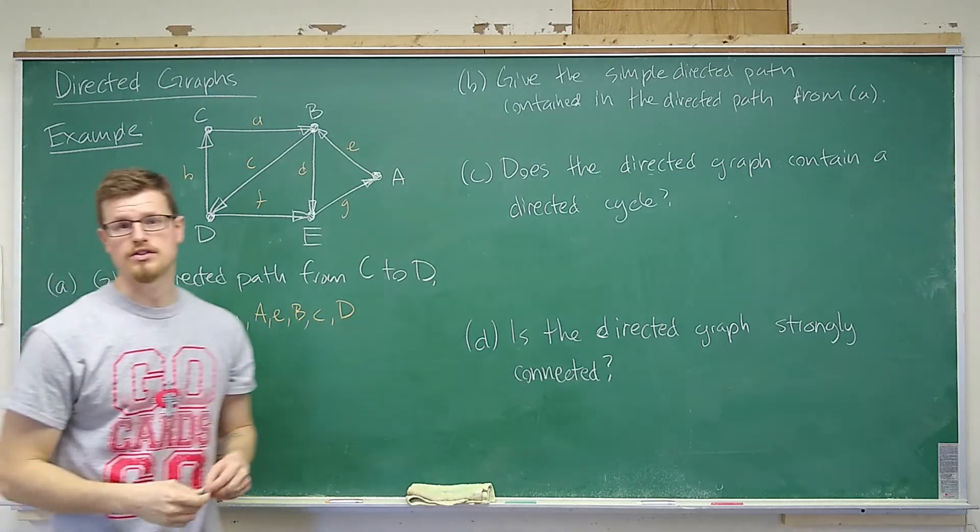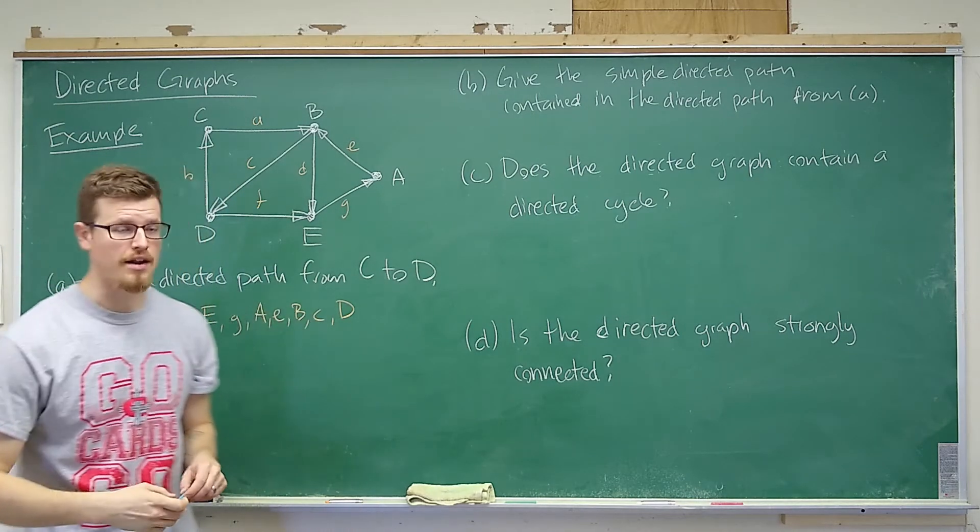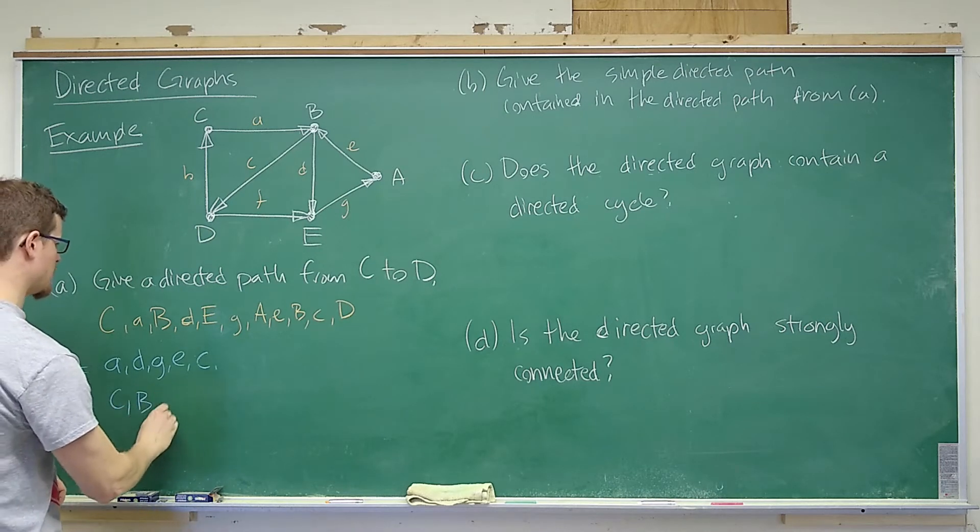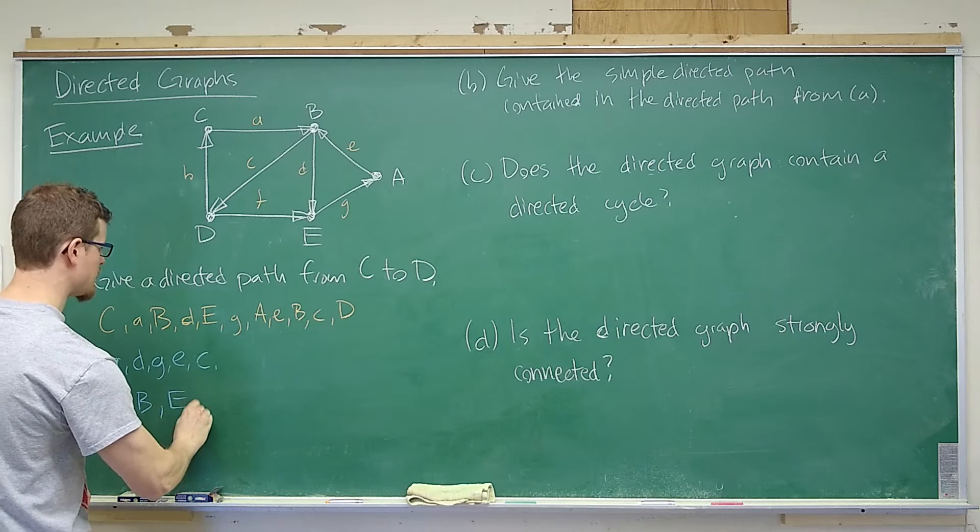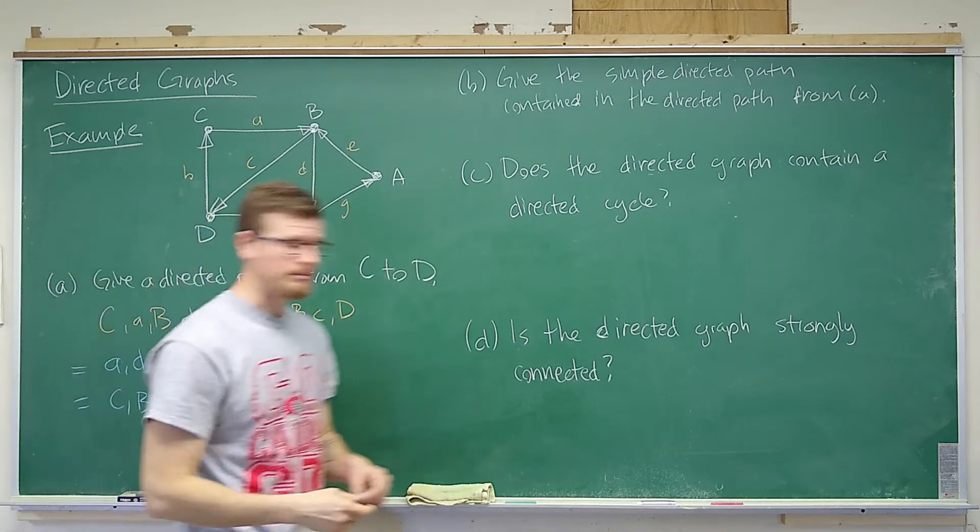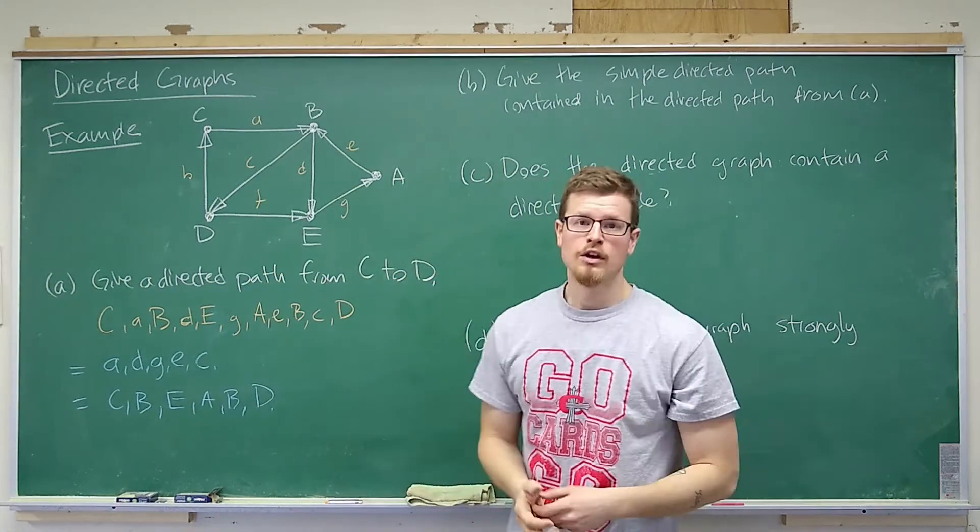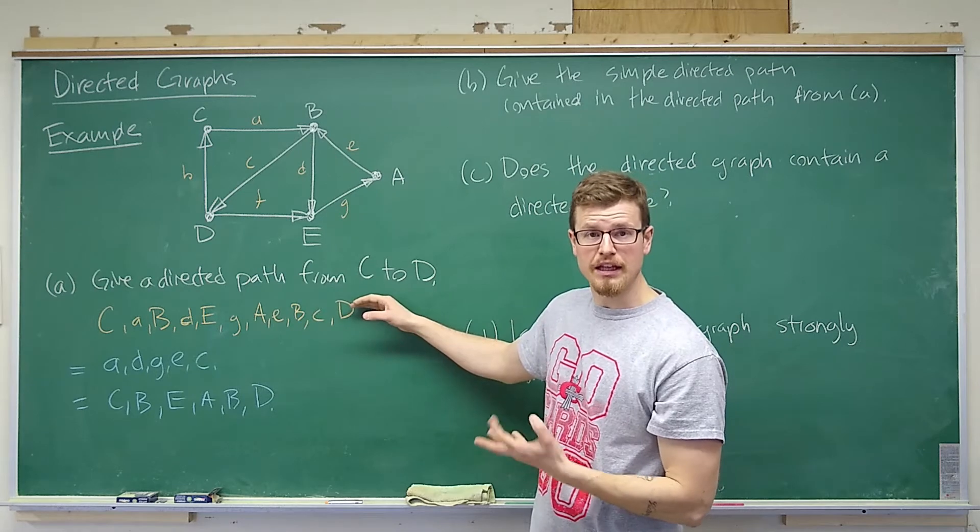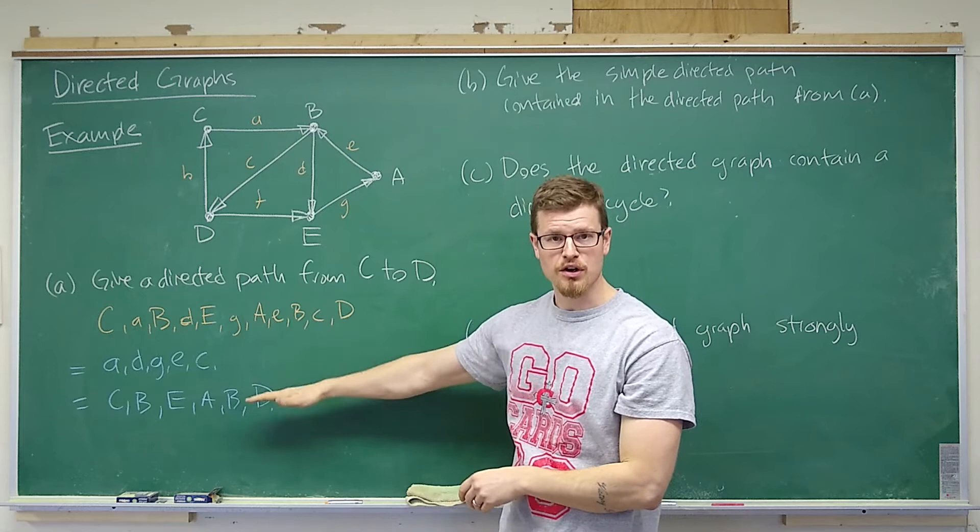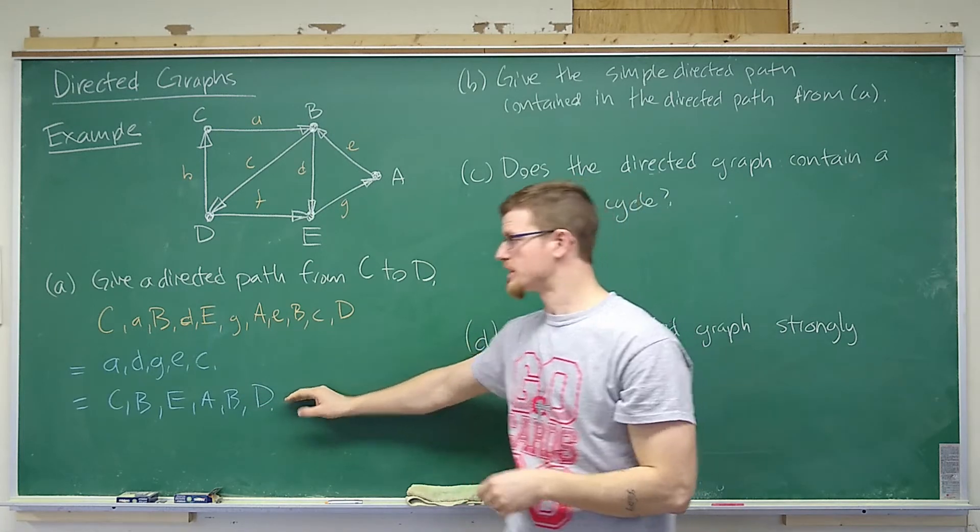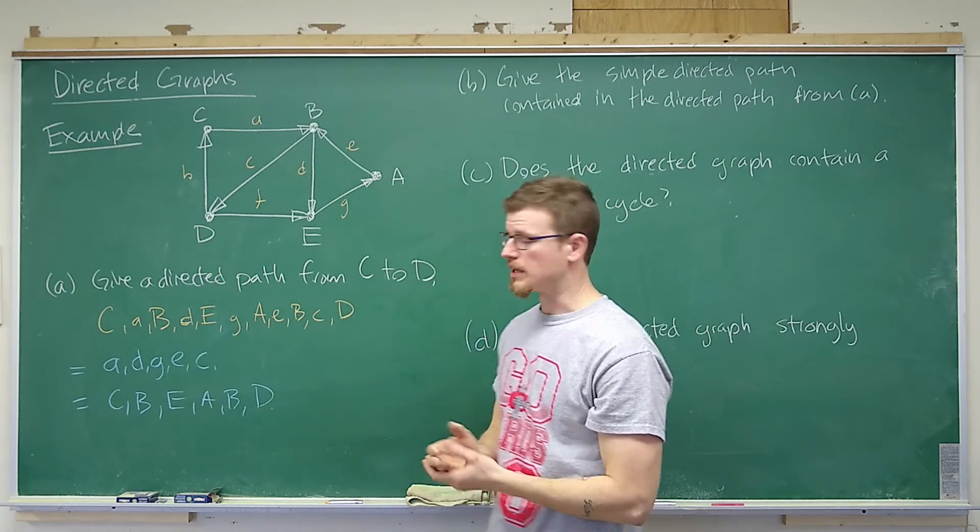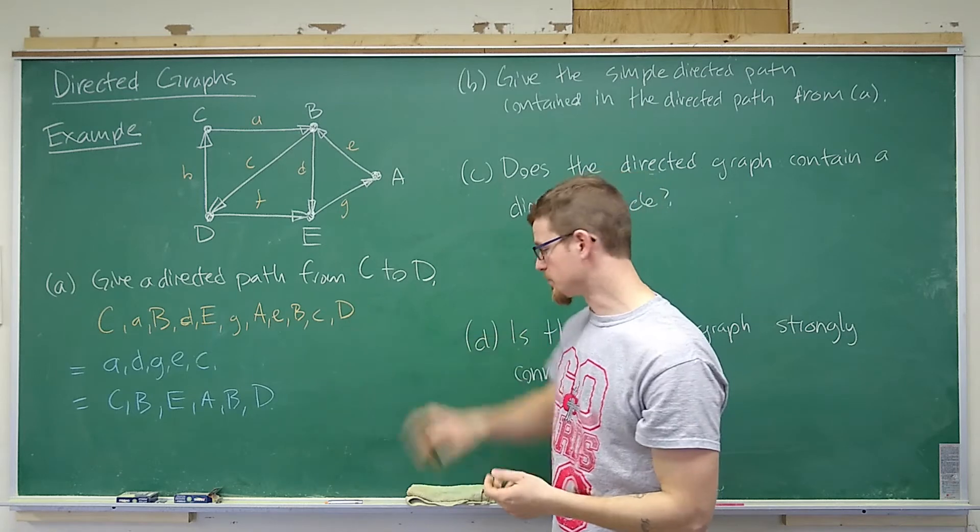Or we can also write this just in terms of the vertices that are visited. So we start at C, then we go to B, then E, A, B, and finally ending at D. So this is a little bit long-winded. Either one of these two options are great. I like this one as a way to represent that this is a path from C to D, and that is clear by the notation used here without including every possible detail.